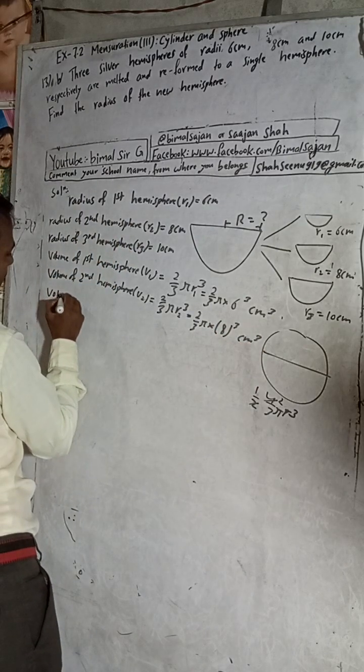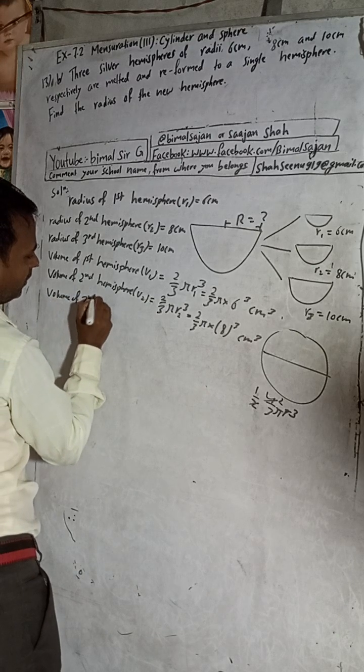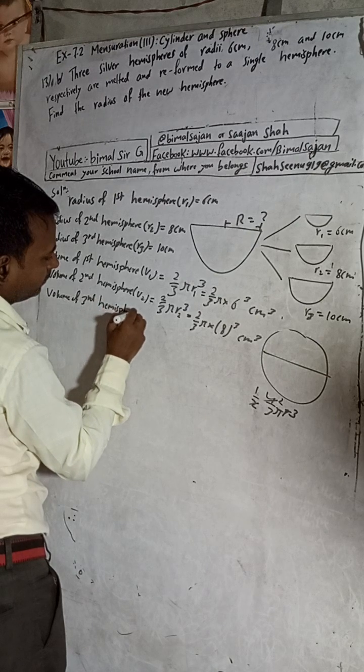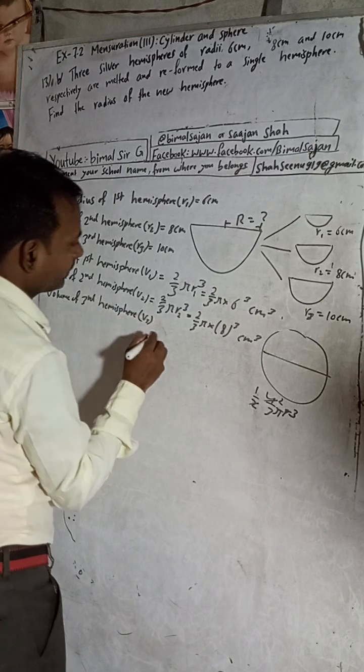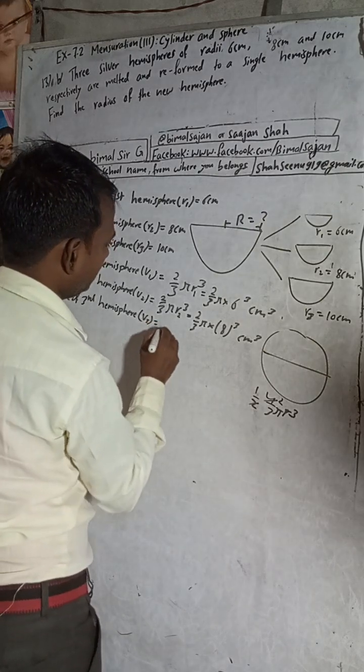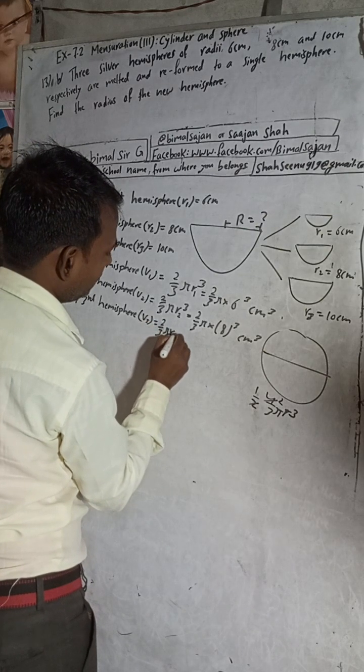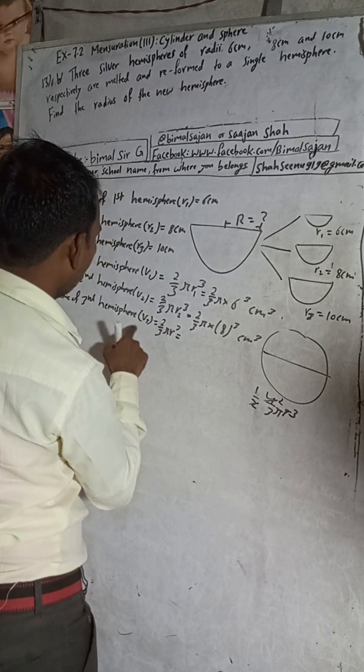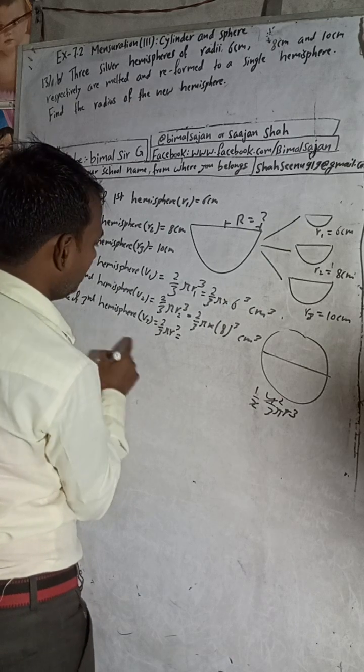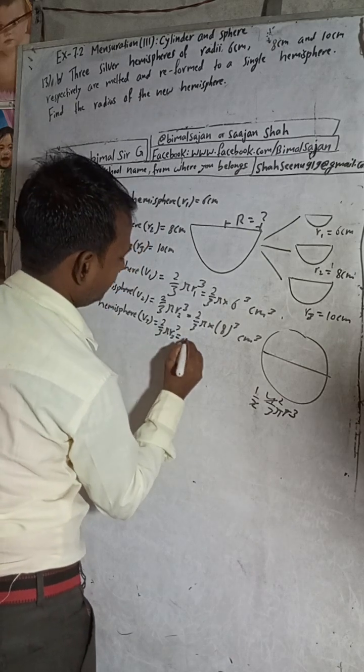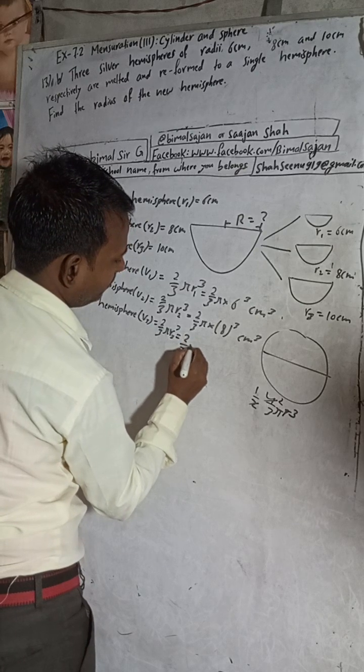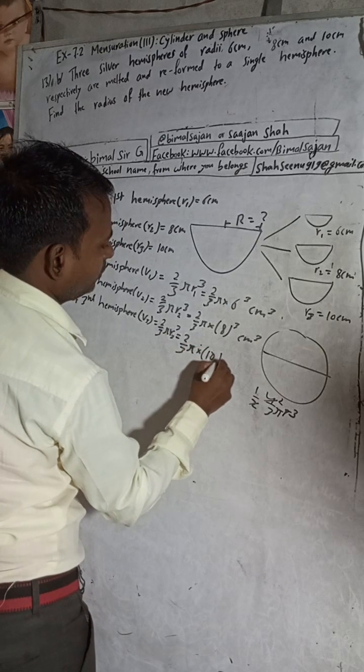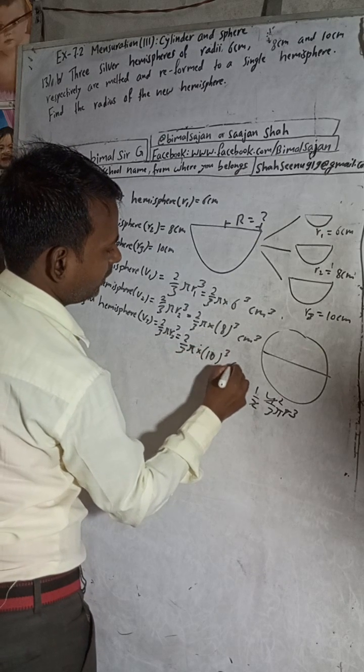Volume of third hemisphere, third hemisphere is equal to 2 by 3 pi R3. So 2 by 3 pi R3, R3 is 10, into 10 cube, cm³, centimeter cube.